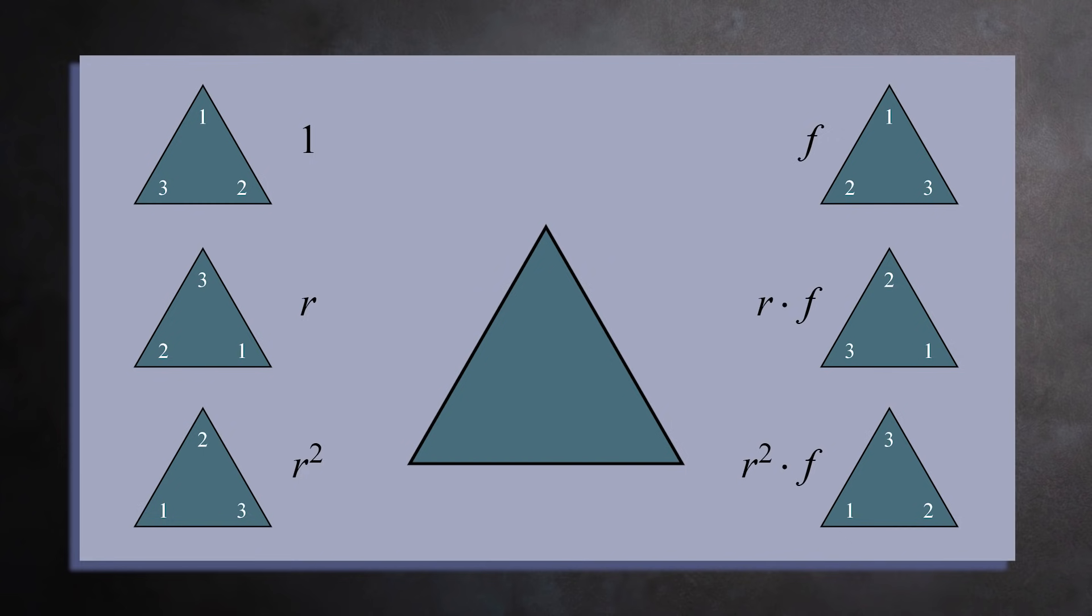This covers all possible transformations. There are six altogether. Notice that there were two basic transformations, a 120 degree rotation, which we called r, and a flip about the vertical axis, which we called f. Aside from the unchanging transformation, each of the transformations are combinations of these two actions.